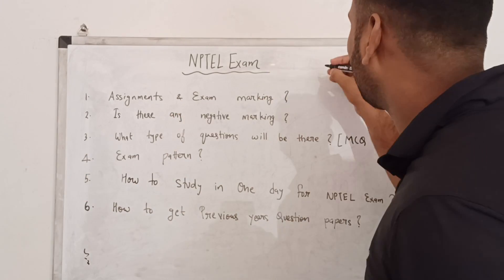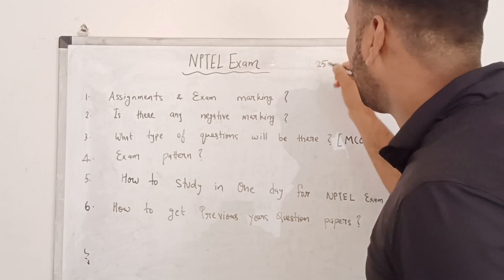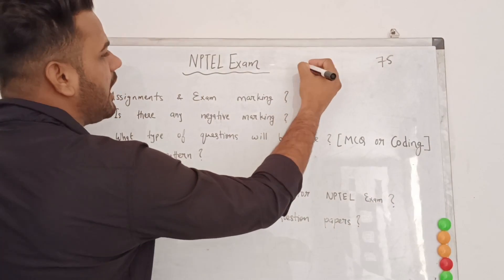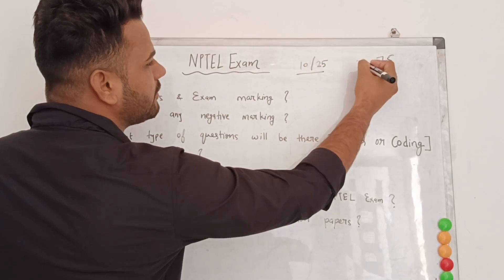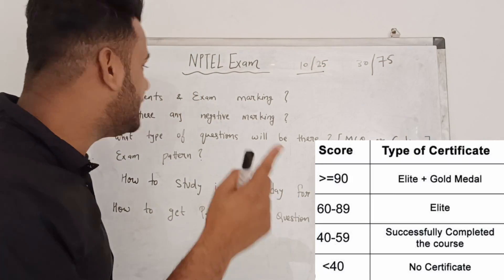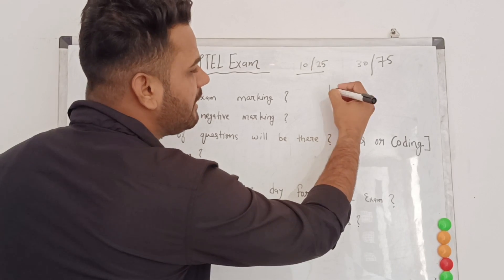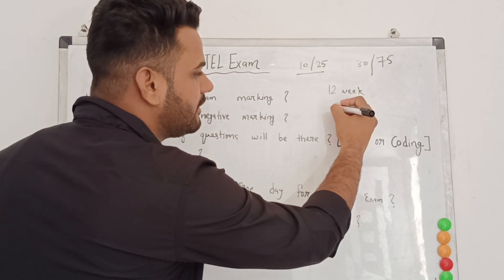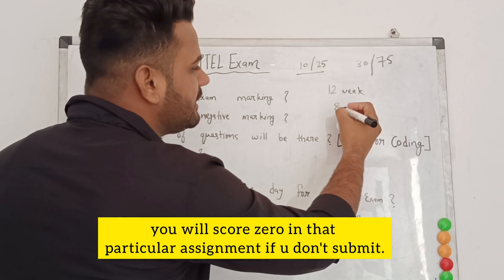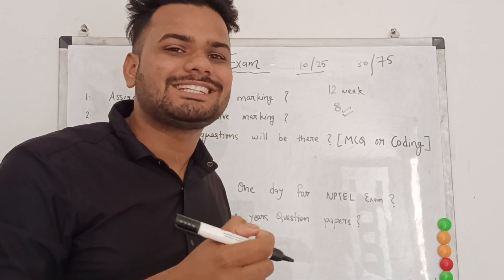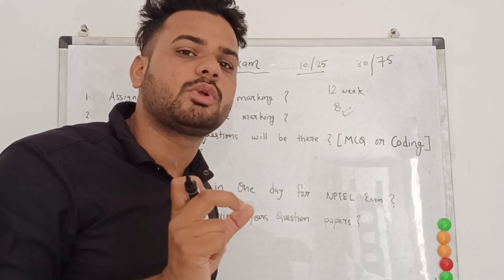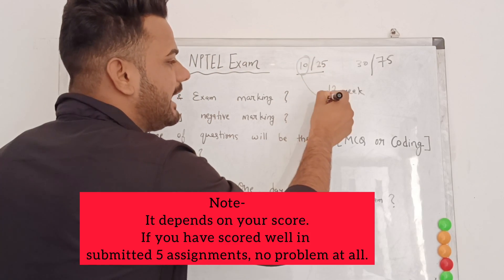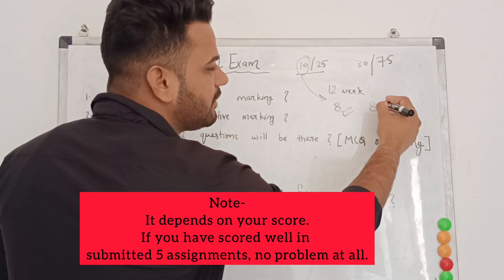Your assignments are worth 25 marks and your exam is worth 75 marks. You need a minimum of 10 out of 25 in assignments and 30 out of 75 in the exam. For a 12-week course, at least eight assignments must be completed. The system selects the eight best assignment scores out of 12 to calculate your assignment marks.